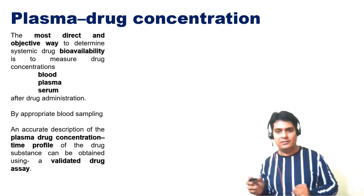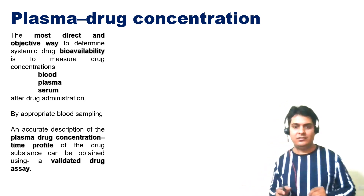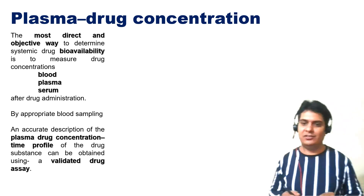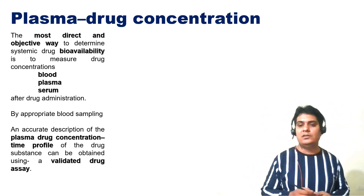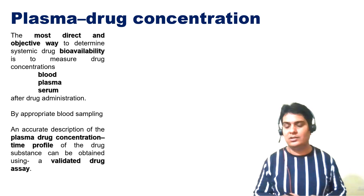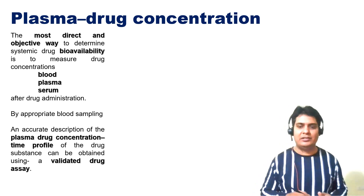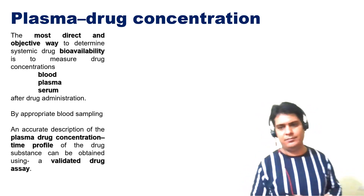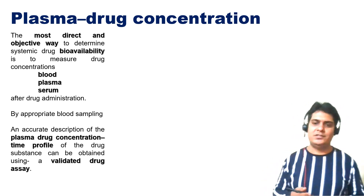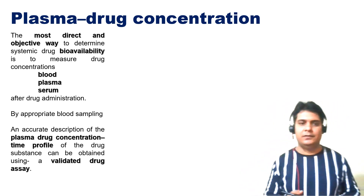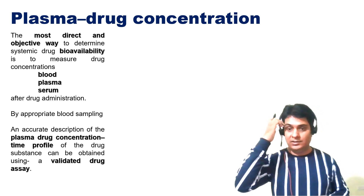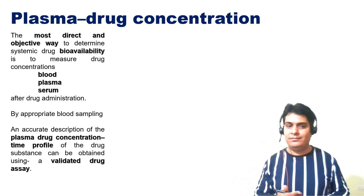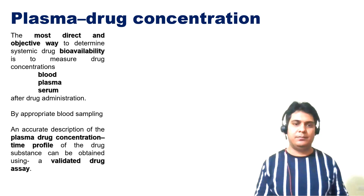In plasma, we need to measure the drug concentration and estimate the drug. We need to have a standard curve. We need to use HPLC, develop a method and validate it, and finally proceed for this type of study. It is the most direct and objective way to determine systemic drug availability.